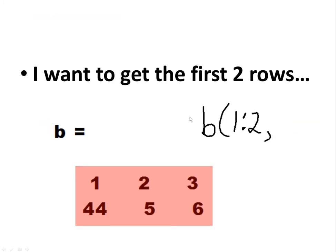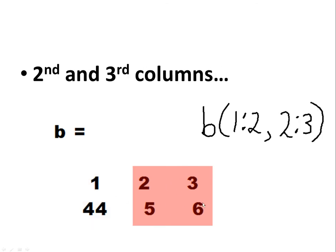I want to get the first two rows and the second and third columns. How do I say that? Like this: b, 1, 2, comma, 2, column 3.